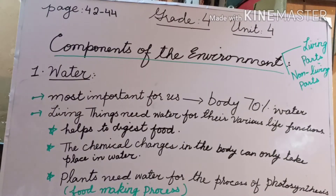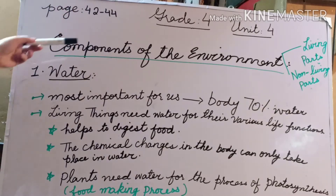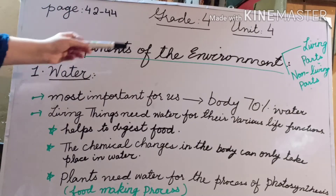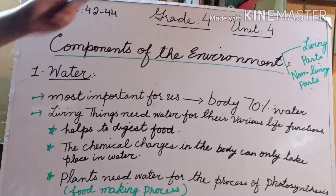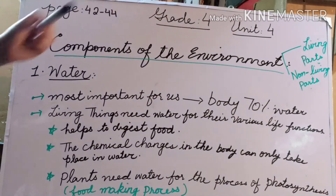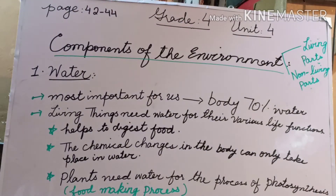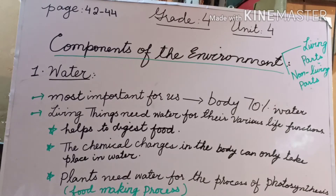We are going to start with unit 4, page number 42 to 43. As we have already discussed, the environment consists of two things: the living parts and the non-living parts. The living parts are basically plants, humans, and animals. Now we are going to talk about the non-living parts, which are also very important and also help the living parts like humans, plants, and animals.